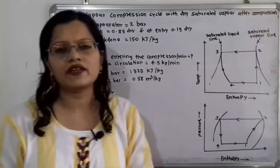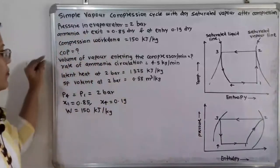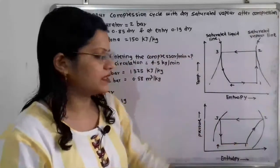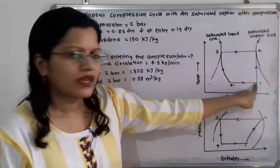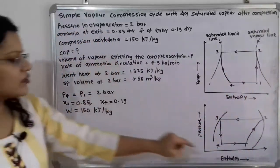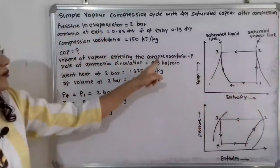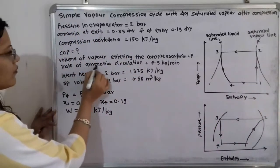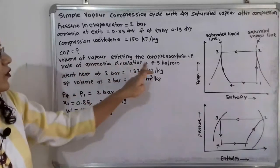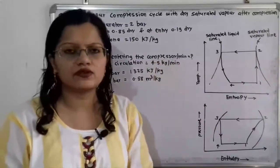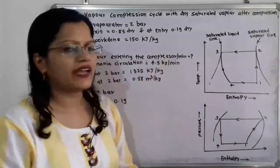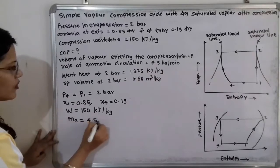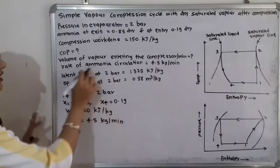We need to find the coefficient of performance and the volume of vapor entering the compressor per minute. Point 1 is the entry point of the compressor. The rate of ammonia circulation, mass of ammonia ma = 4.5 kilogram per minute.